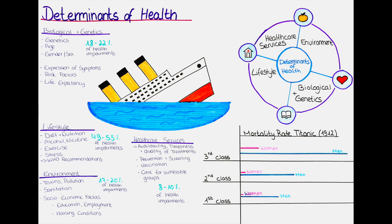How much salt intake is recommended? The WHO recommends a daily salt intake of less than 5 g, or less than 2,000 mg of sodium for adults. This is equivalent to approximately 1 teaspoon of salt per day. However, many people consume far more than this, which can increase their risk of high blood pressure, heart disease, stroke and other health problems. The majority of the salt in our diets comes from processed and packaged foods such as bread, cheese and canned soups, so it is important to read food labels and choose lower salt options whenever possible.